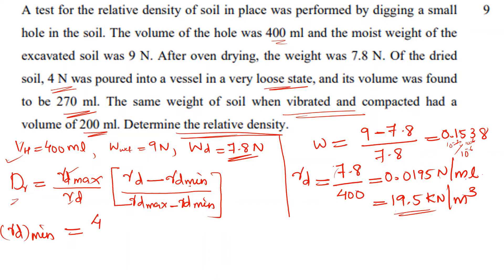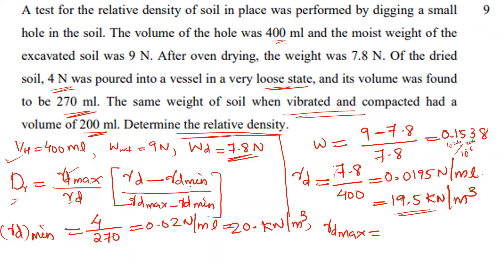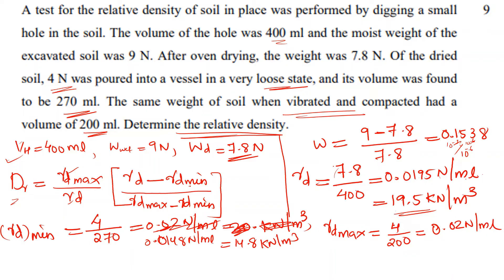The minimum dry unit weight γd_min (loose state) is 4 N ÷ 270 mL ≈ 0.01481 N/mL, giving approximately 14.8 kN/m³. The maximum dry unit weight γd_max (compacted state) is 4 N ÷ 200 mL = 0.02 N/mL, giving 20 kN/m³.